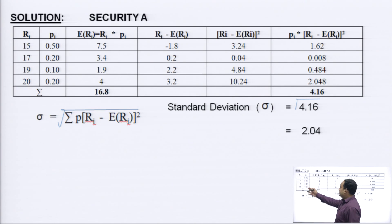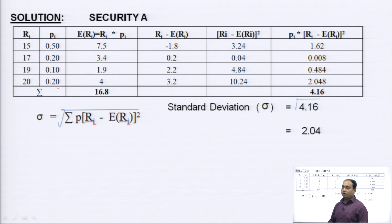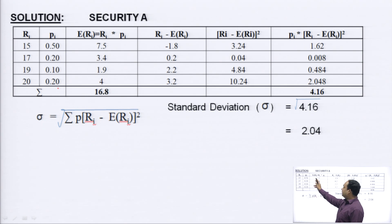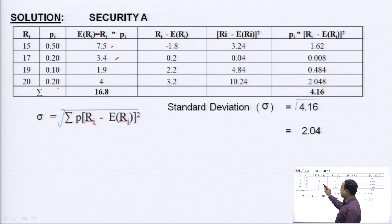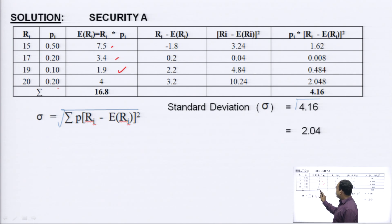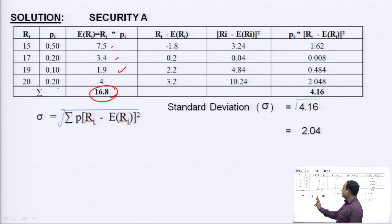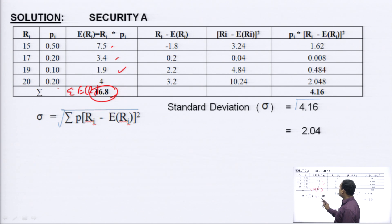For Security A, the possible returns and respective probabilities are given. To calculate the expected return, we multiply each possible return with its probability: 15 × 0.5 = 7.5, 17 × 0.2 = 3.4, 19 × 0.1 = 1.9, and 20 × 0.2 = 4. The total expected return, which is the summation of E(R_i), equals 16.8.